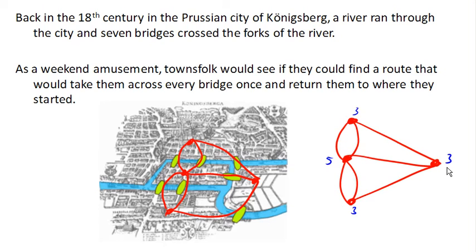It turns out that no, there is not an Euler Circuit for this bridges scenario — for the bridges of Königsberg. And in fact, there's not even an Euler path, because all of our vertices here have odd degree. It's more than just a pair. So there's no way to even start in one location, cross every bridge once, and end up in a different place. There's no way to cross every bridge once without having to cross a bridge twice.